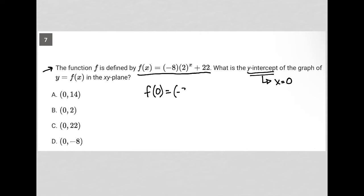f of 0 would equal negative 8 times 2 to the 0 power. We're replacing x with 0 plus 22.